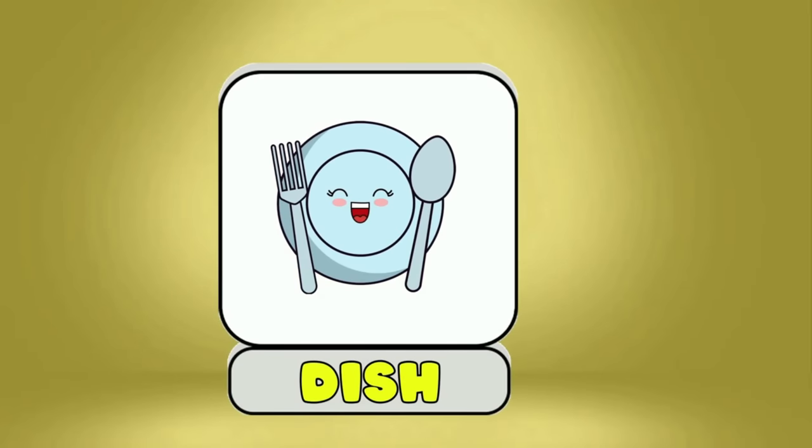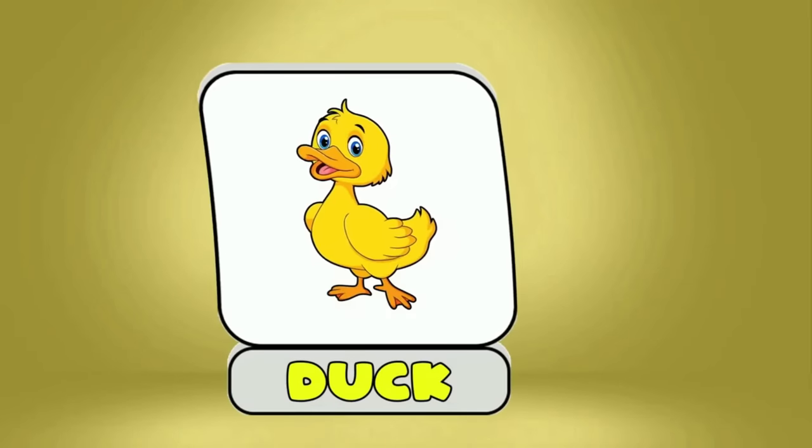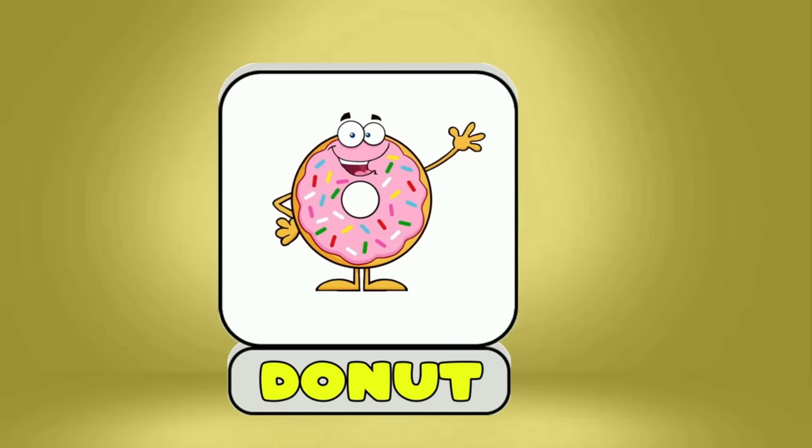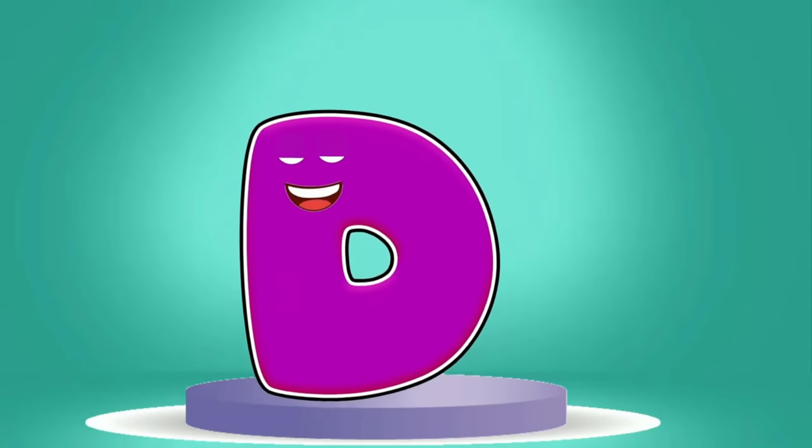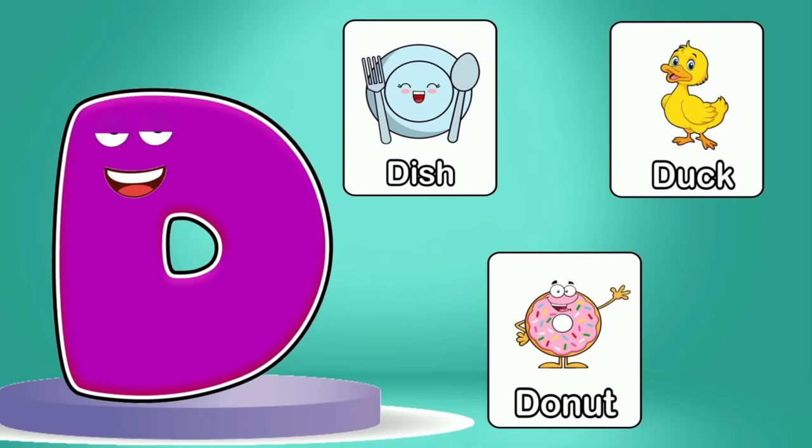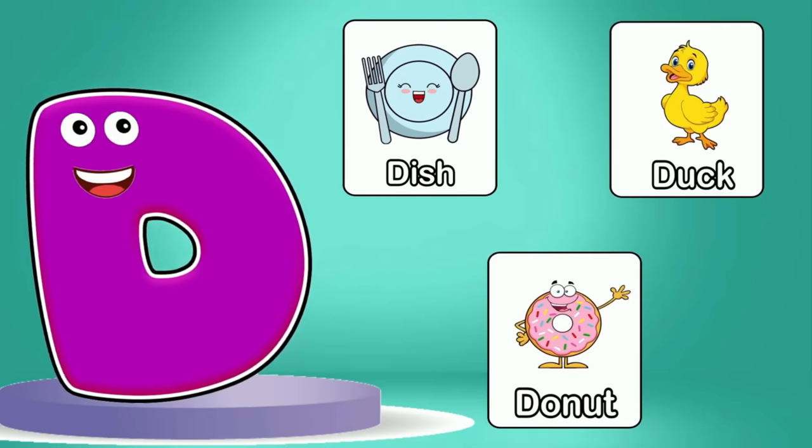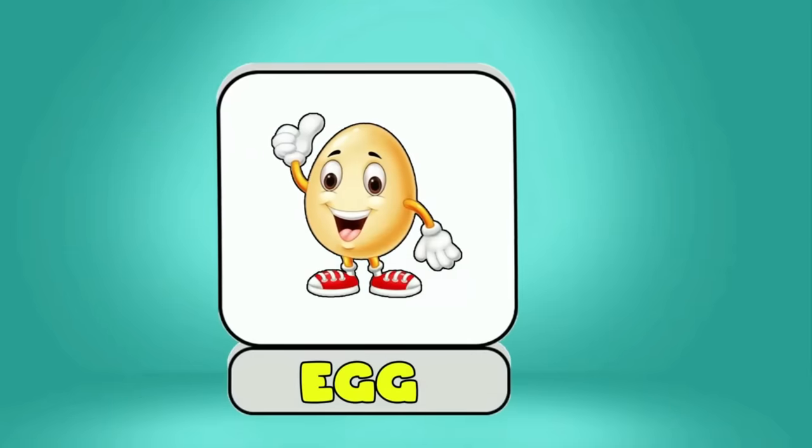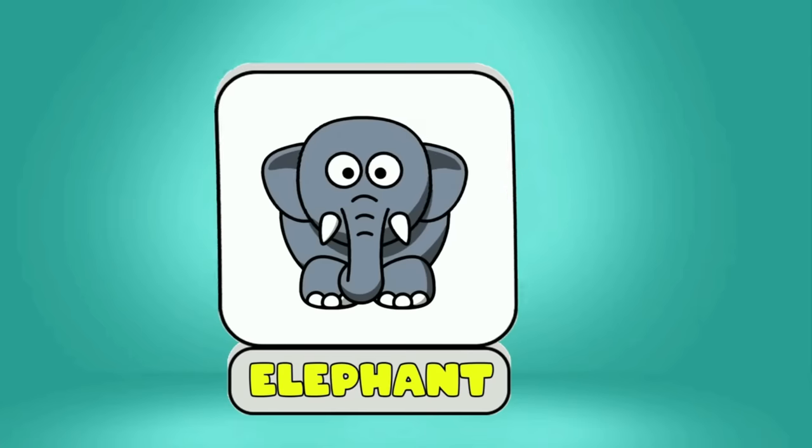This is D. D is for Dish, Duck, Donut. This is E. E is for Egg, Elephant.